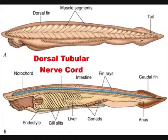Cordon nervos-dorsal: bandă de fibre nervoase care coboară pe partea dorsală a corpului. Această structură realizează conexiunea dintre creier și organe ca mușchi și viscere.